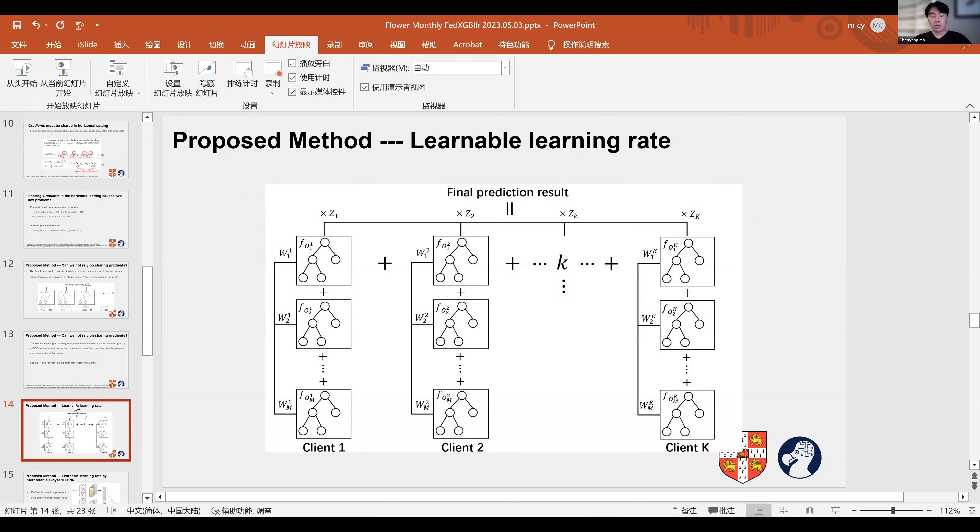To facilitate our insights, the final prediction results given an arbitrary data sample is calculated by the weighted sum of all trees from all clients as shown in this figure. Each vertical tree chain is a tree ensemble built by one client, where W is the learning rate assigned to each tree, and ZK is the weight applied to balance each tree ensemble's prediction outcome. We refer to this as an aggregated tree ensemble.